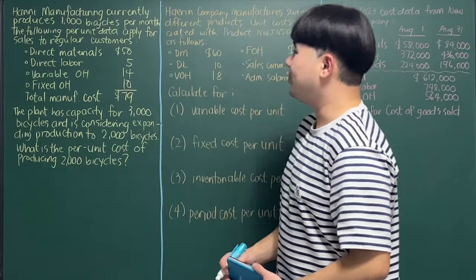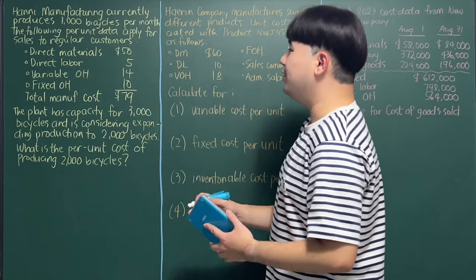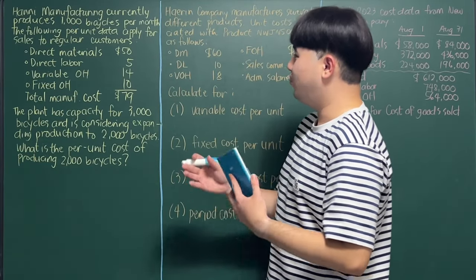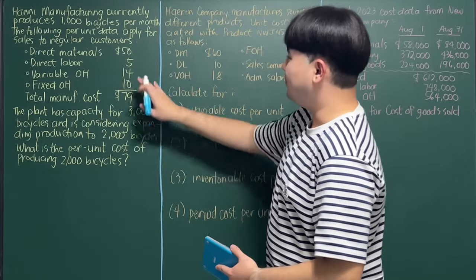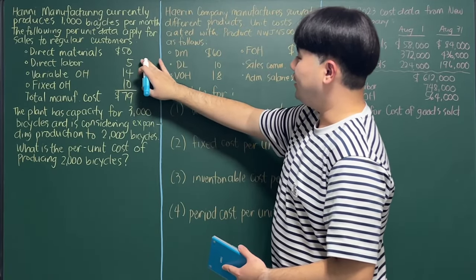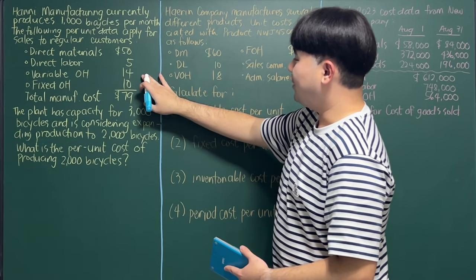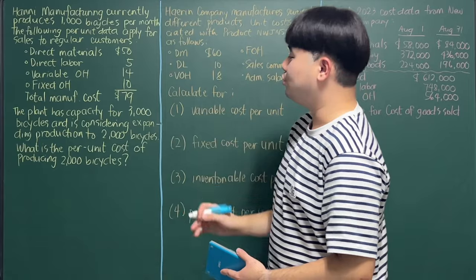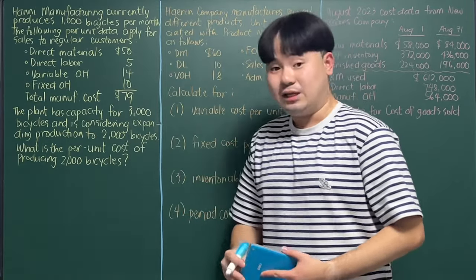Honey Manufacturing currently produces 1,000 bicycles per month. The following per unit data apply for sales to regular customers: direct materials per unit of $50, direct labor per unit of $5, variable overhead of $14, and fixed overhead of $10, with a total manufacturing cost of $79.